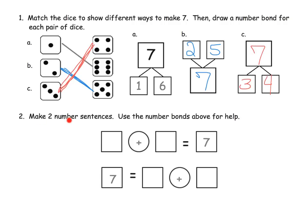So here, make two number sentences. Use the number bonds above for help. So something plus something equals seven. So parents and teachers, our students can use these as their inspiration, or they can come up with their own if they choose. But let's do one plus six equals seven. Let's do another number sentence. Let's do three plus four equals seven. Or in this case, we would say seven equals three plus four. So teachers, parents, why do we do this?